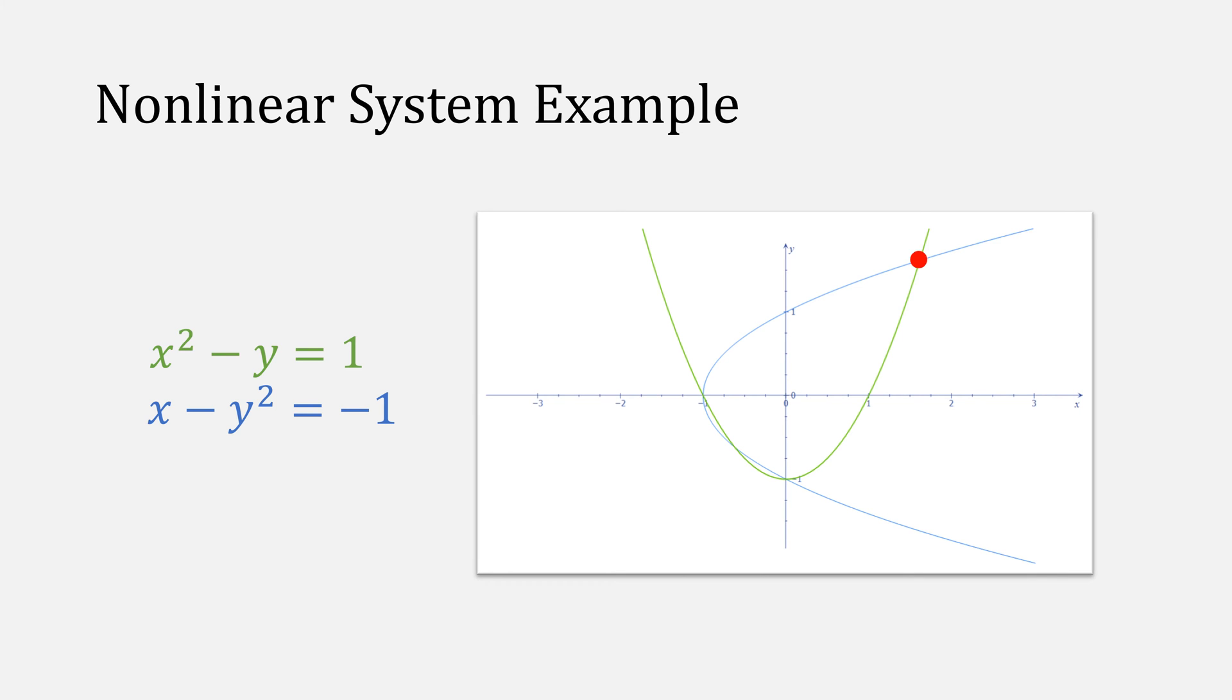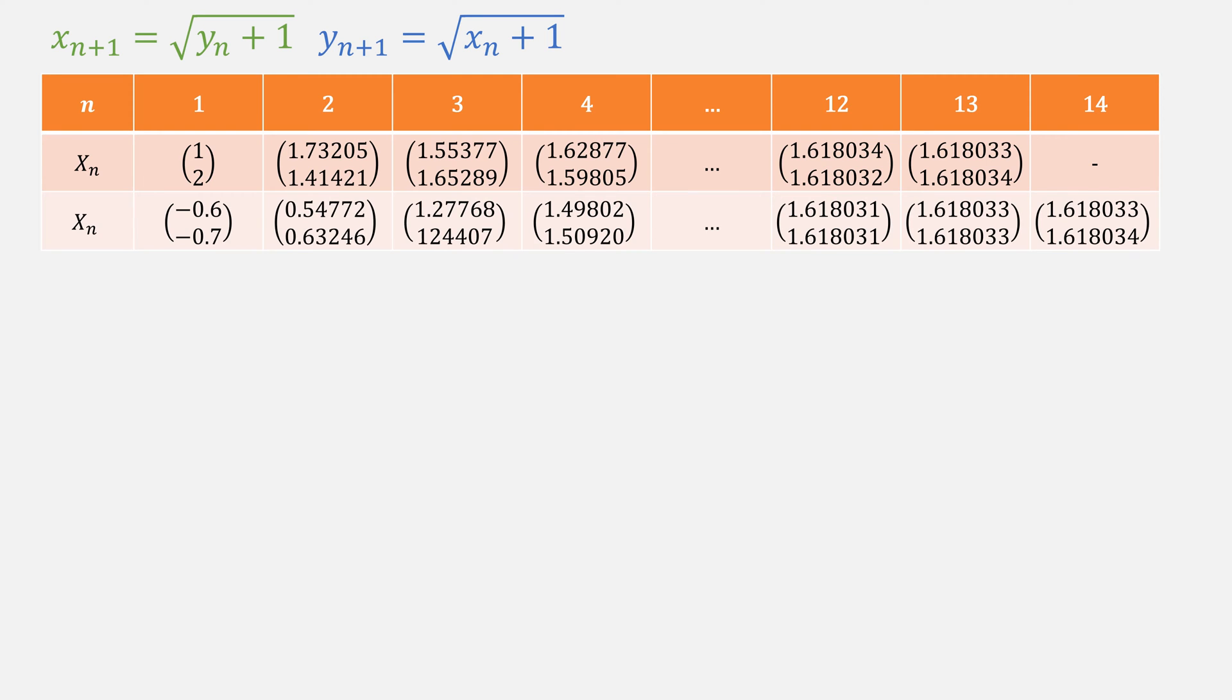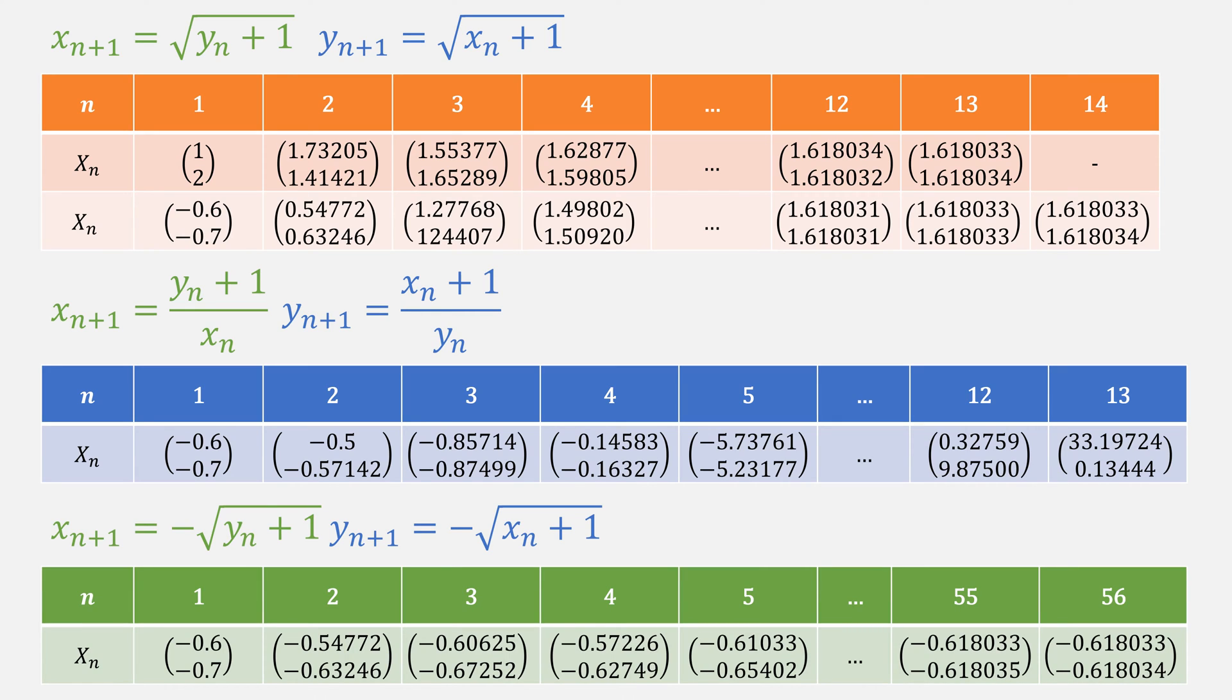So far we've been able to find this solution using fixed point iteration, but what if we wanted to find this one? With our set of equations starting at 1, 2, we found our first solution at 1.618 for x and 1.618 for y. If we instead start at negative 0.6 and negative 0.7, this should give us a better chance at finding our second solution. And indeed, this one ends up at our first one again. Let's instead use a different set of equations. And if we start from negative 0.6 and negative 0.7, this ends up diverging. If we used another set of equations starting from that point, after 55 iterations, we're able to find our second solution.